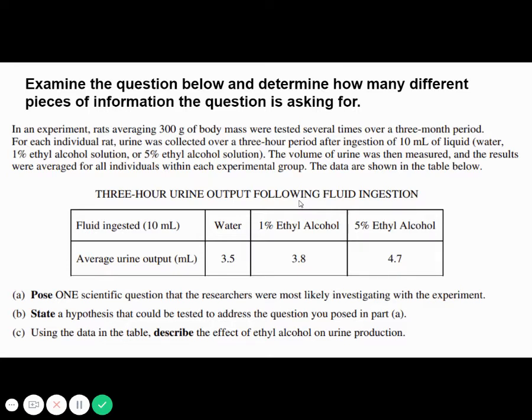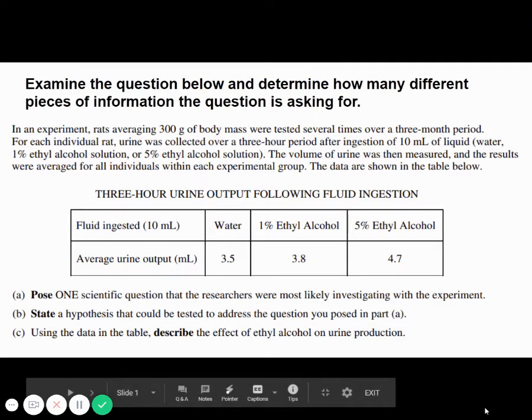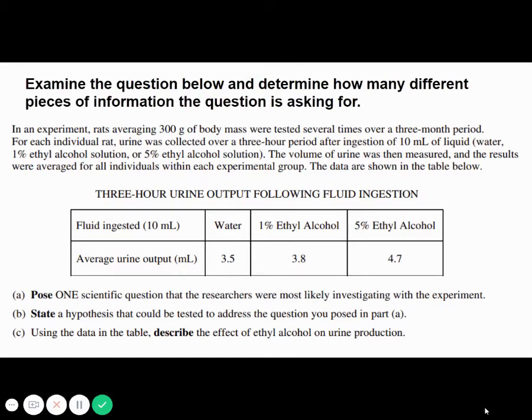The first thing you want to do is take a look at the question and determine how many different pieces of information the question's asking for. So go ahead and read through the question now. And then we're looking for how many pieces of information. Don't try to answer it. Don't do anything other than figure out how many pieces of information.